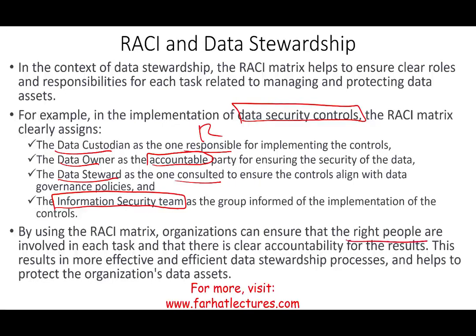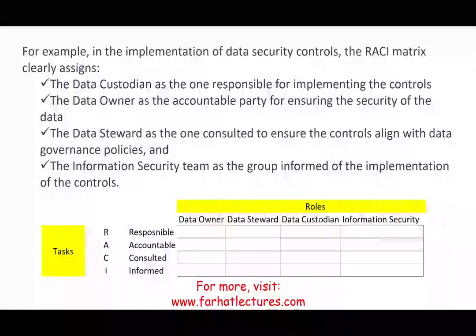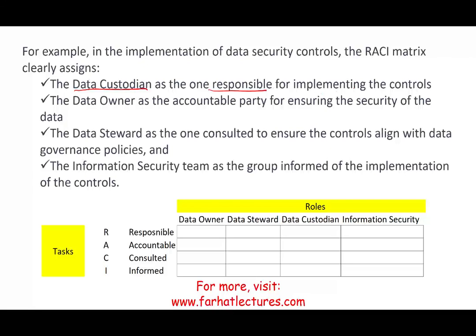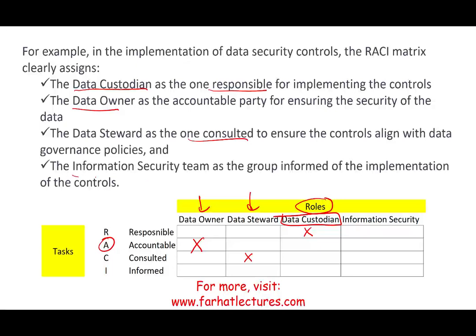By using the RACI model, we ensure that the right people are involved in each task with clear accountability for the results. Looking at the matrix itself: on the top we have the roles, and on the sides we have the tasks. The data custodian is marked as Responsible — the group doing the work. The data owners are marked as Accountable — the party with the greatest responsibility. The data steward is marked as Consulted — we ask their opinion. And the information security team is marked as Informed — we inform them about the implementations.